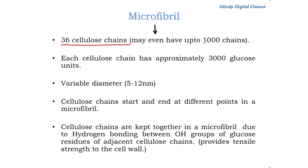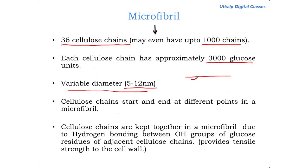Each microfibril has a minimum of 36 cellulose chains, but the number can reach up to a thousand chains. Each cellulose chain has approximately 3,000 glucose units. So 3,000 glucose units form one cellulose chain, and 36 such chains form a microfibril. Each microfibril is variable in diameter, ranging from 5 to 12 nanometers. The cellulose chains start and end at different points in the microfibril — it's not necessary that each chain starts from the same point.